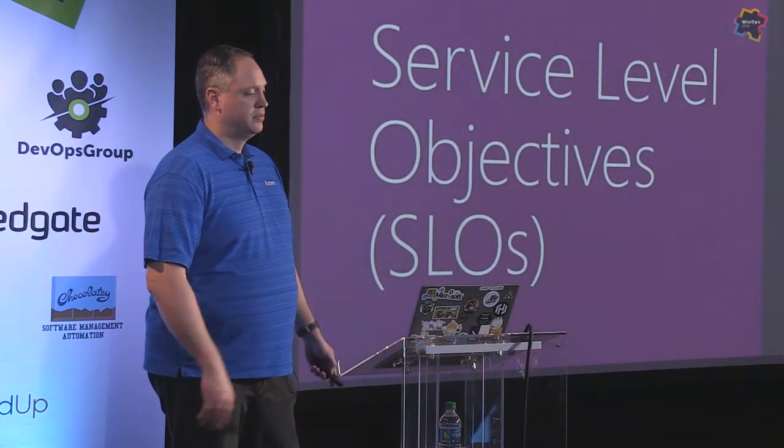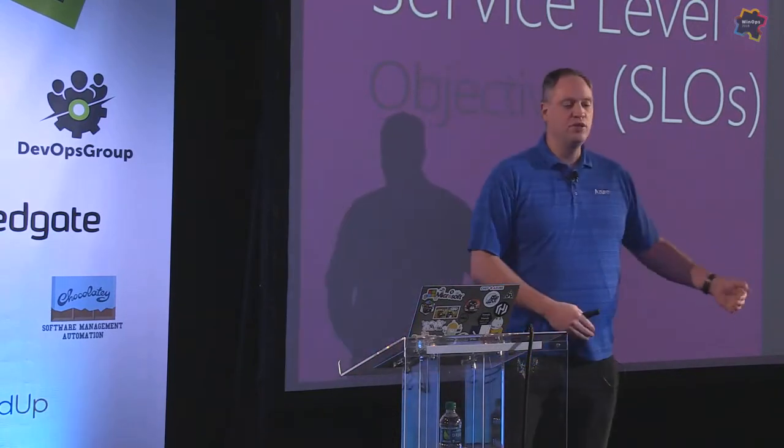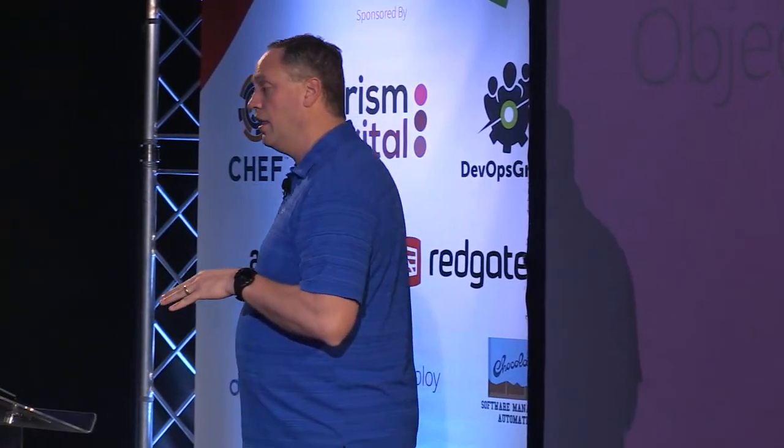Then we have service-level objectives, and we're going to focus on the objective portion. When we create these service-level objectives — which is basically what thresholds we put around our service-level indicators — we want to start with what the users care about. We come at it from that perspective, not necessarily what I care about. We're going to work back from where the user's perspective is. If we work from the desired behaviors back to the specific indicators, that makes it a lot easier to deal with 'it has to be up all the time.'